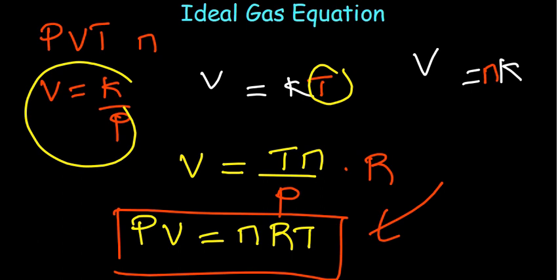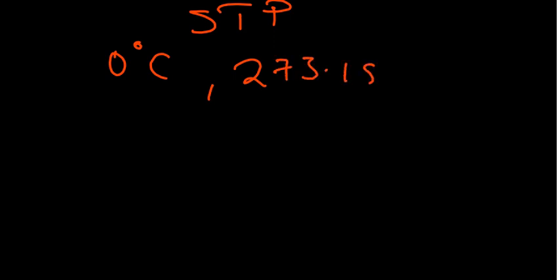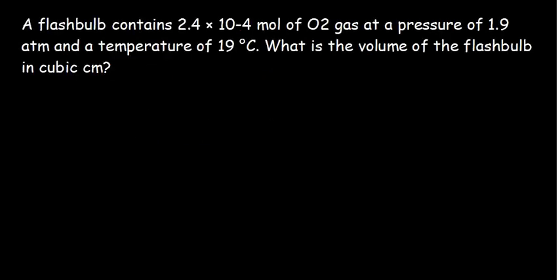We understand that at standard temperature and pressure, the temperature is zero degrees Celsius, in Kelvin is 273, and pressure is 1 atm. Let's now proceed and look at a practice question concerning the ideal gas equation.